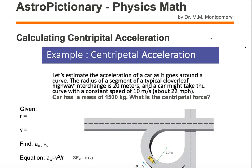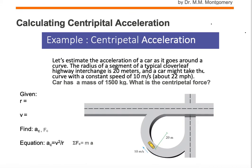Let's look at this problem. Let's estimate the acceleration of a car as it goes around a curve. The radius of a segment of a typical cloverleaf interchange is around 20 meters.